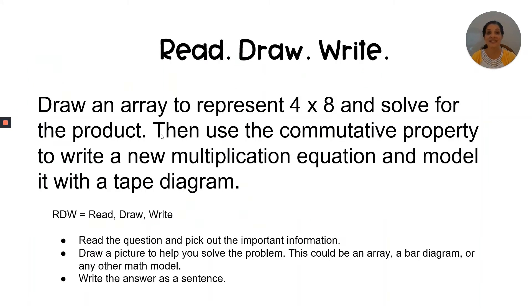Let's put our skills to work. We're going to do a Read-Draw-Write question together. You will need paper and pencil, a dry erase board, or you can use a Jamboard — an online tool you can use if you have access to Google. The RDW process: R stands for read the question and pick out the important information. D stands for draw it out — we want to draw a math model. Finally, W stands for write the answer as a sentence, using our best words to create a detailed answer that includes words from the question and a description of how we arrived at our solution.